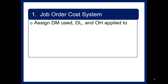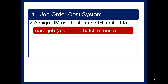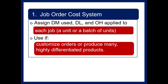As a reminder, in a job order system, we assign direct material used, direct labor, and overhead applied to each job or a batch of units that are alike. We will use this if we customize orders or produce many highly differentiated products.